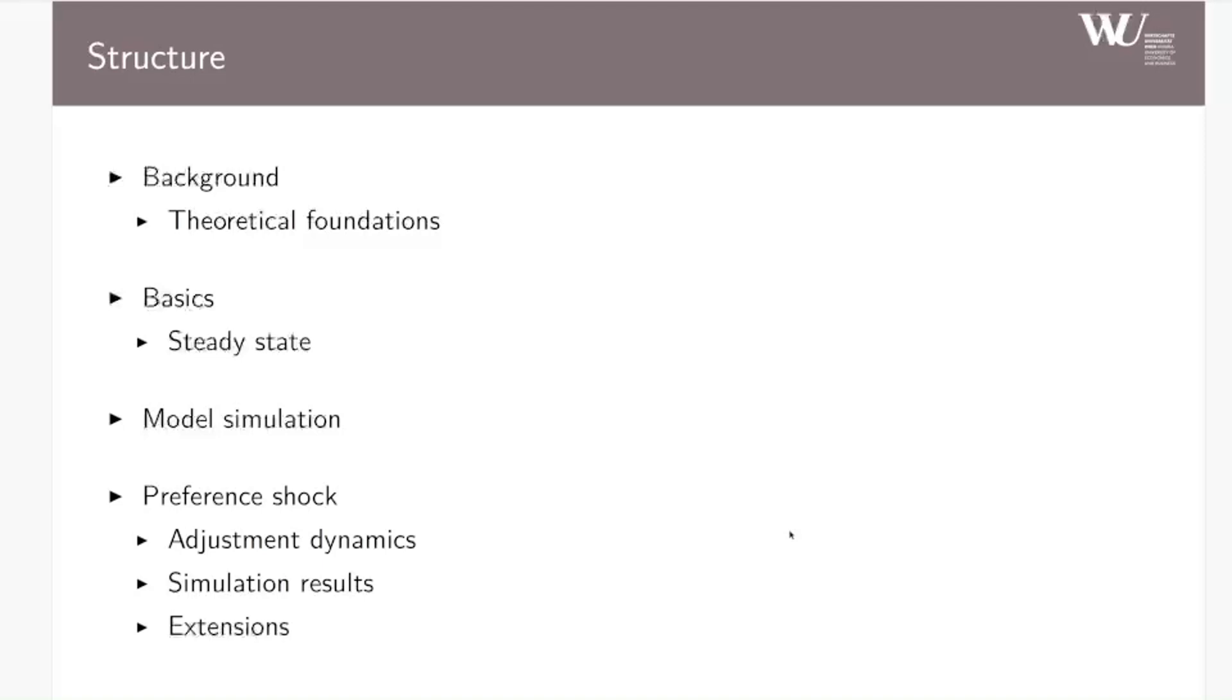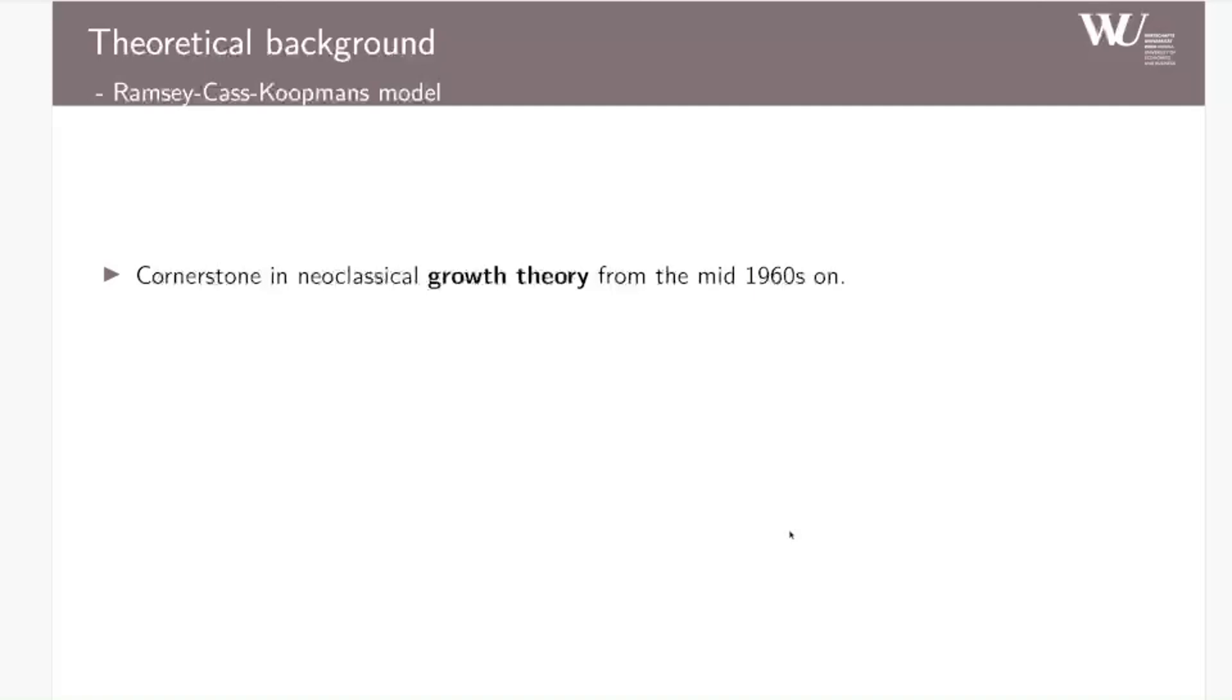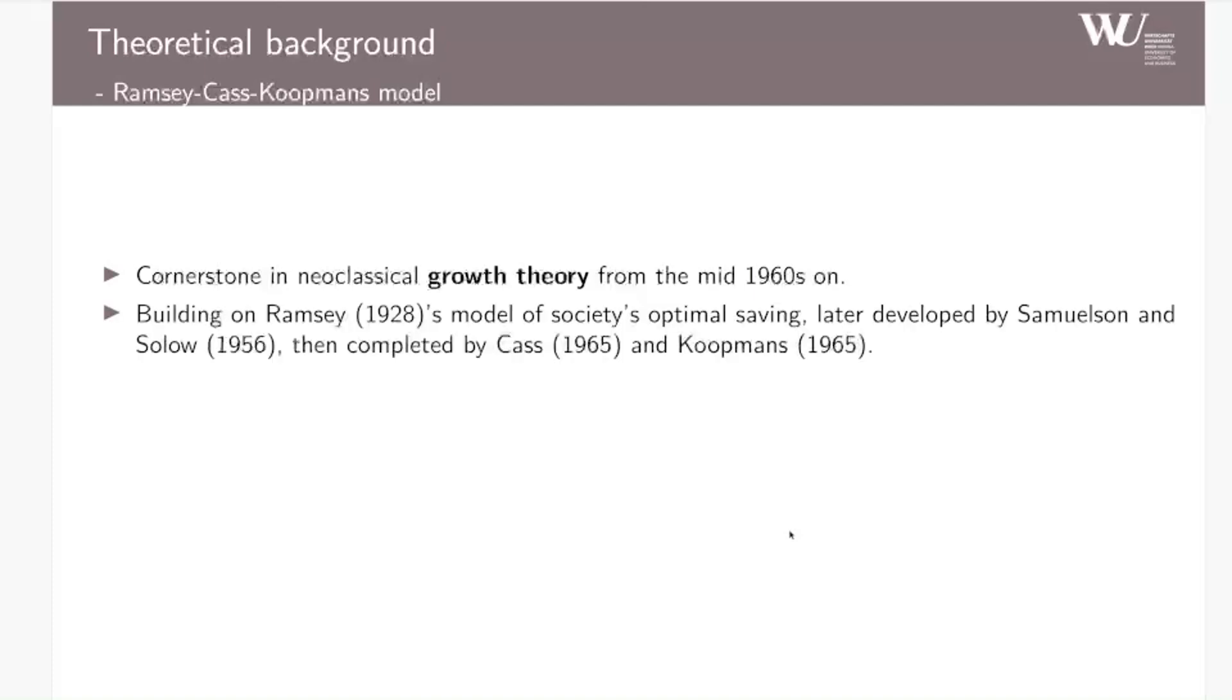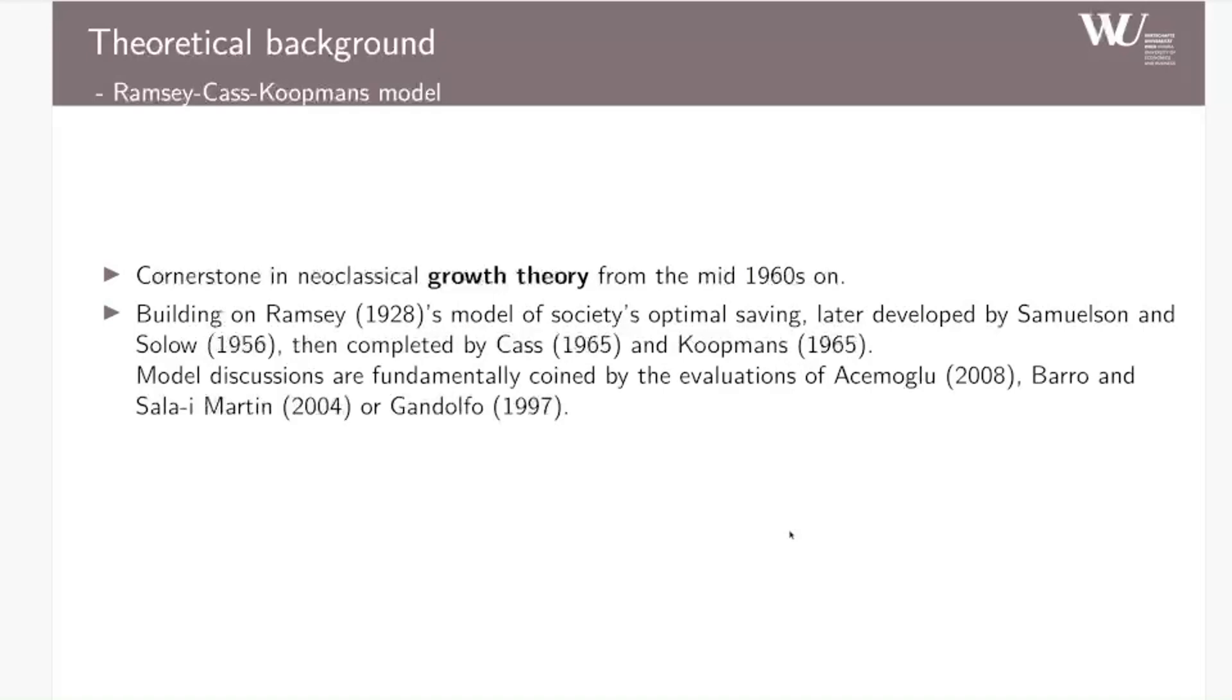As now mentioned, I assume some background knowledge on the Ramsey-Cass-Koopmans model. If you are not familiar with it at all, I can strongly recommend to watch the videos by Mr. Pretner on them before. The Ramsey-Cass-Koopmans model is really the cornerstone in neoclassical growth theory from mid-1960s on. It is largely building on Ramsey's model of society's optimal saving, which was later developed by Samuelson and Solow and then completed by Cass and Koopmans. Model discussions are fundamentally coined by the evaluations of Acemoglu but also Barro-Sala-i-Martin or Gandolfo.